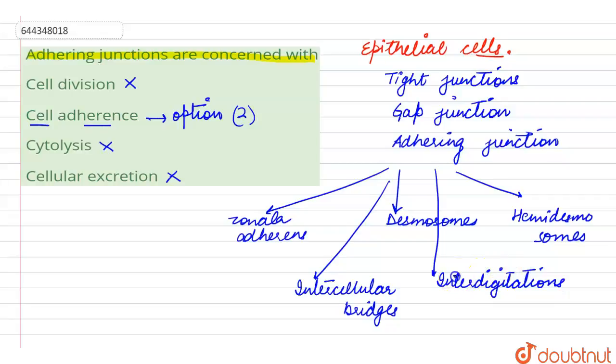So, these are the five types of adhering junctions which can be found in the epithelial tissue. Here we see that cell adherence is the right answer for this question. That is option number two because adhering junctions are concerned with cementing the neighboring cells together. This is all about this query. Thank you.